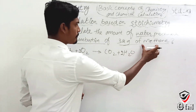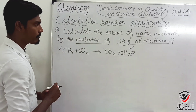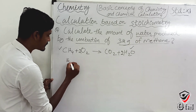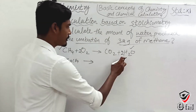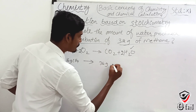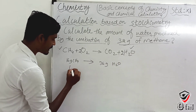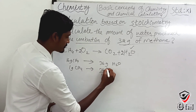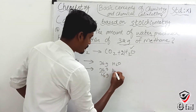The molar mass of CH₄: carbon is 12, hydrogen 4 times 1 equals 4, so molar mass is 16 grams per mole. For water: 2 moles of H₂O means 2 × (2H + O) = 2 × 18 = 36 grams. So 16 grams of CH₄ produces 36 grams of H₂O. For 1 gram of CH₄: 36 divided by 16 grams of H₂O.